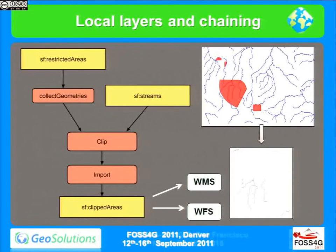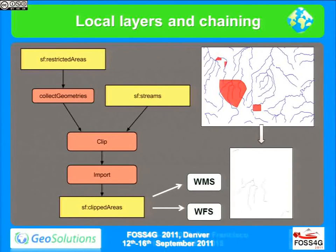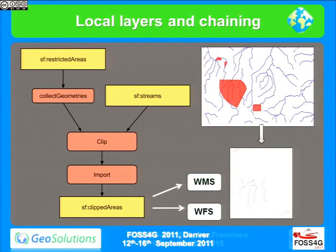This is one example stressing the concept of layer integration — a clip-and-ship scenario. I have some cutting geometries and some rivers, and I want to cut the rivers over those geometries. I'm going to use a few built-in processes to collect the geometries as a mask, then clip the streams, and finally use the import process to import the result as a new layer, so the client can make a WMS request to view it. This also shows chaining — taking multiple simple processes and putting them in sequence to perform a more complex action.